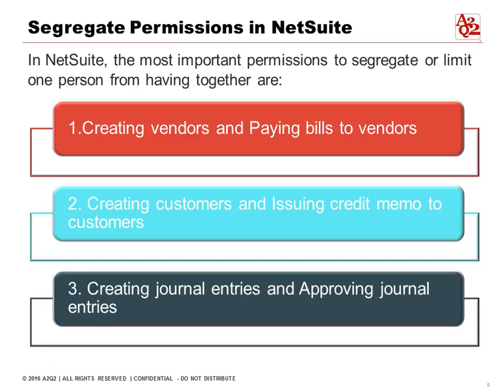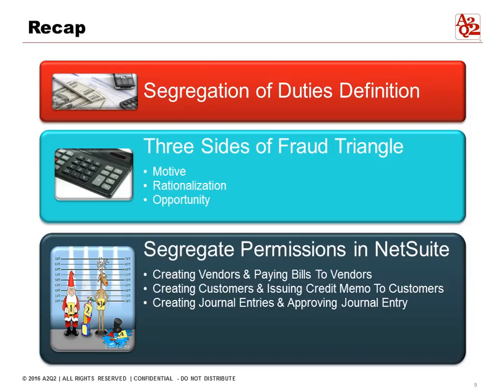To recap: we discussed the definition of segregation of duties, the three sides of the fraud triangle — motive, rationalization, and opportunity — and the key items to focus on within NetSuite: creating vendors and paying bills, creating customers and issuing credit memos, and creating and approving journal entries. In future sessions we'll go into more detail. Thanks so much and we'll talk to you soon.